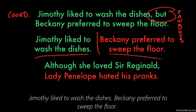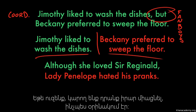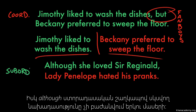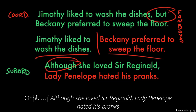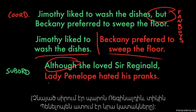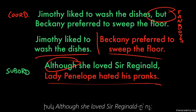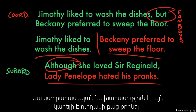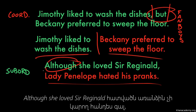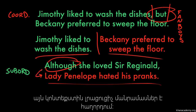These can each be their own sentences: Jimothy liked to wash the dishes. Beckony preferred to sweep the floor. We can combine these if we want to, and we have. Whereas this subordinating conjunction sentence that begins with although cannot be separated into two sentences: Although she loved Sir Reginald, Lady Penelope hated his pranks. Lady Penelope hated his pranks — that's a sentence. Although she loved Sir Reginald — that's not a sentence. This is a dependent clause. This cannot be split, because although she loved Sir Reginald doesn't stand on its own; it just grants additional context and detail to the fact that Lady Penelope hated Sir Reginald's pranks.